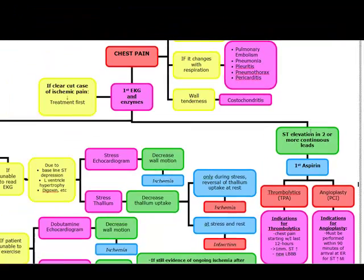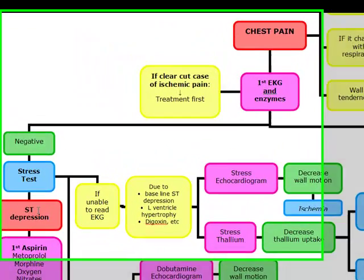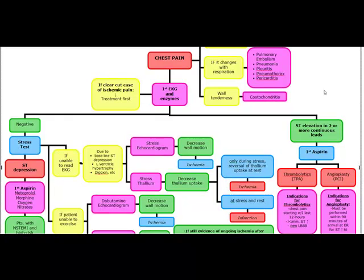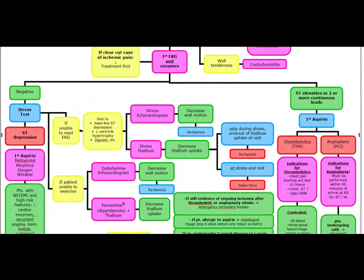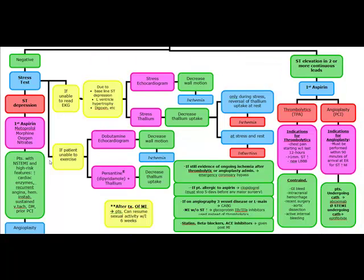If the cardiac enzymes are positive and the EKG shows an ST depression, this is known as an NSTEMI, or non-ST elevation MI. How do you distinguish between ST depression due to unstable angina versus NSTEMI? The cardiac enzymes will be positive. So if the EKG shows ST depression and the cardiac enzymes are positive, this is an NSTEMI. Treatment is aspirin, morphine, oxygen, nitrates, and a beta blocker. These patients need immediate coronary catheterization.